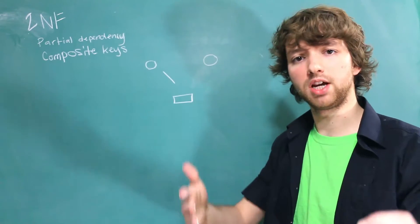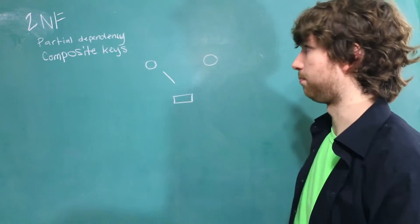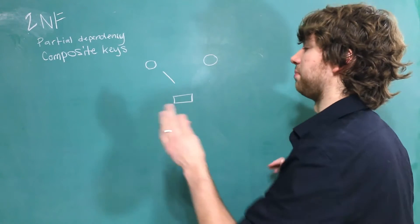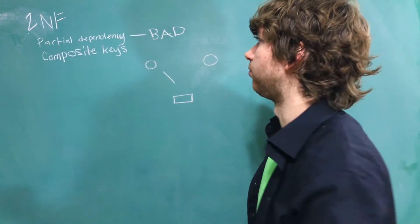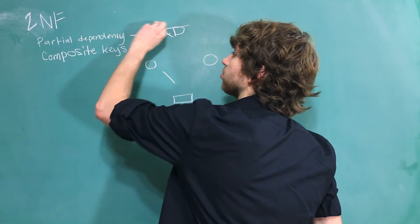Now, I know this is all conceptual, but give me a couple minutes. I'll give you some examples. But for now, just know that partial dependencies are bad. The entire goal of second normal form is to get rid of partial dependencies.